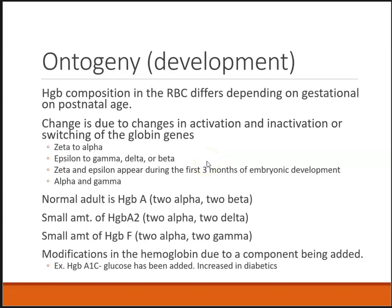Development of the different types of red blood cells depends on gestational age. Genes are turning on and turning off — zeta goes to alpha, epsilon goes to gamma, delta, and beta. In a normal adult, we have 2 alpha and 2 beta, which is hemoglobin A. We also have a little hemoglobin A2, which is 2 alpha and 2 delta. And a small amount of hemoglobin F, which is 2 alpha and 2 gamma. Hemoglobin A1C is where glucose is actually attached, used to monitor diabetics to see how much glucose is in the system.